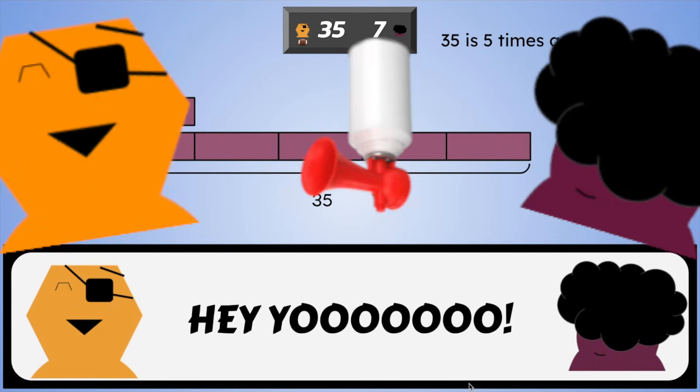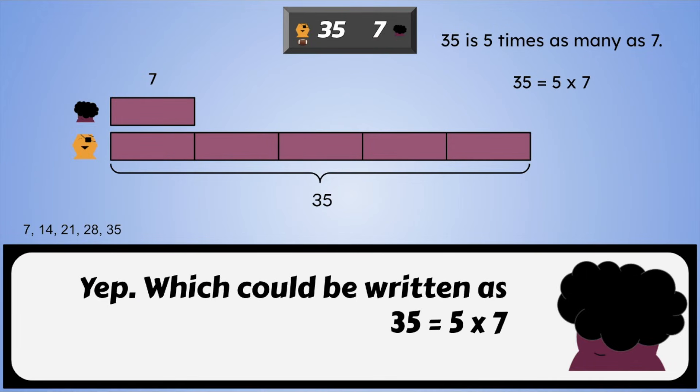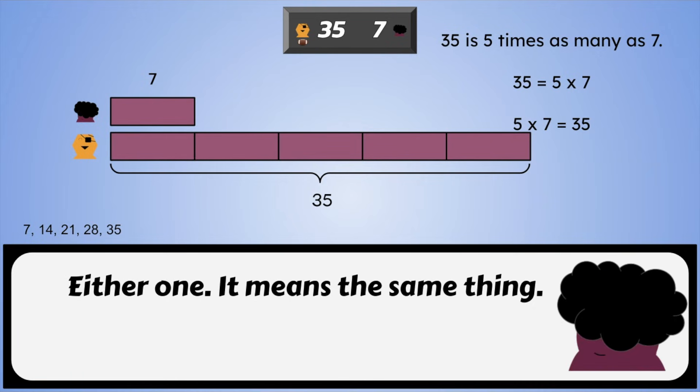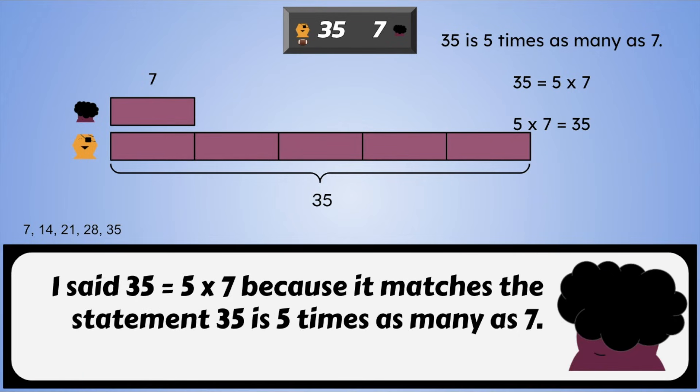Heyo! Yep. Which could be written as 35 equals 5 times 7. Why is the 35 first? Shouldn't it be 5 times 7 equals 35? Either one. It means the same thing. I said 35 equals 5 times 7 because it matches the statement 35 is 5 times as many as 7.